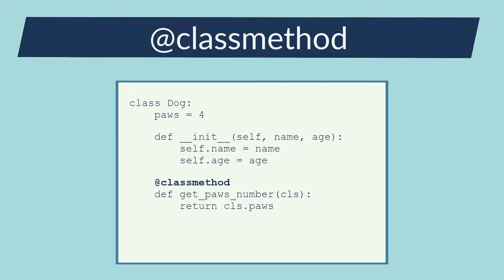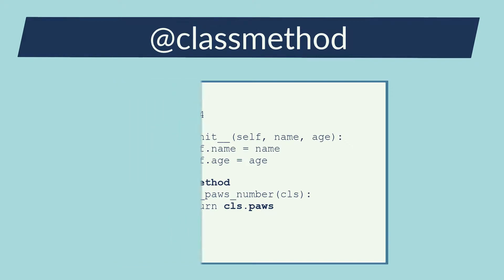An alternative is the class method. This way the method is also modified — no self-input parameter, but this time I have the cls-input parameter. This new input parameter allows me to access the variables of the class, not the variables of the instance. Static method and class method are two built-in decorators.